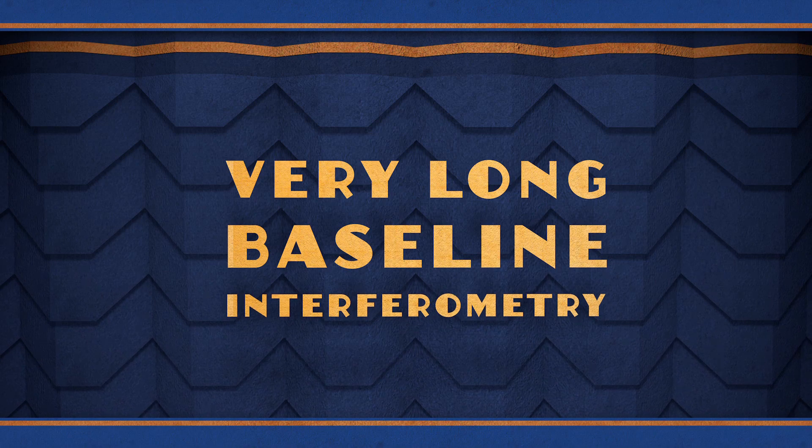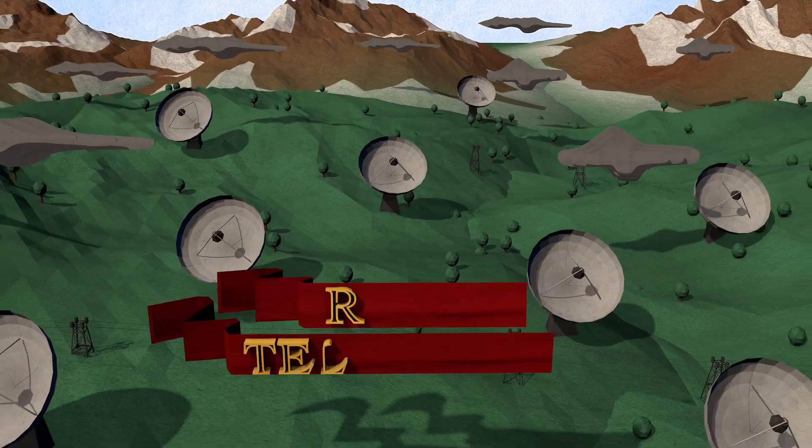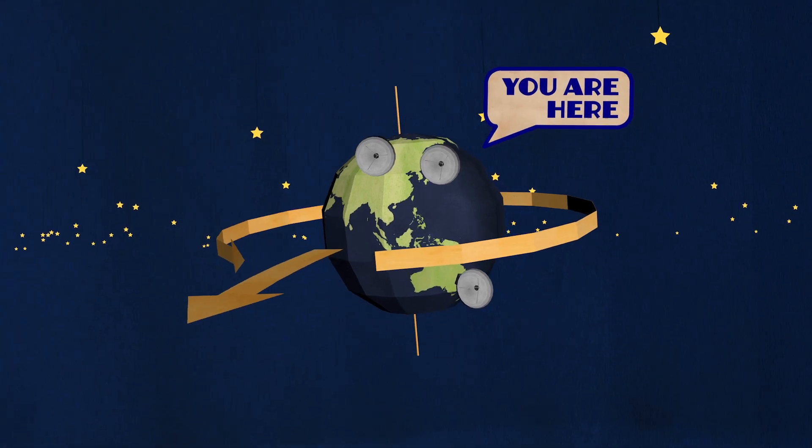Scientists know all this by using a technique called Very Long Baseline Interferometry, which is basically a fancy term for using radio dishes to very precisely measure the Earth's orientation.